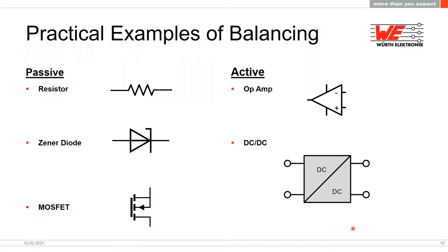Our declaration for passive versus active balancing is as follows: for passive balancing we use resistors, Zener diodes, and MOSFETs. For active balancing we use an operational amplifier and a special DC-DC converter dedicated to charging, discharging, and balancing supercapacitors. That is our distinction between those two possibilities.